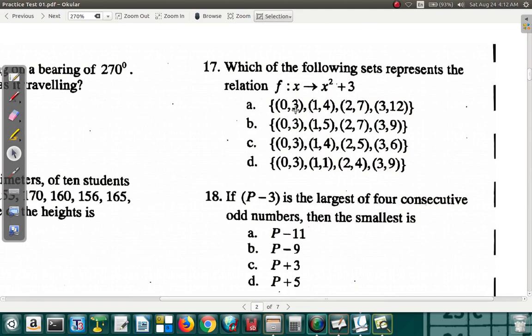Question 17. Which of the following sets represent the relation f(x) is mapped onto x squared plus 3? Now let's see. You put in the number on the left and you get out the number on the right. So x is the first number. When you work out the function, you should get the number that's on the right.